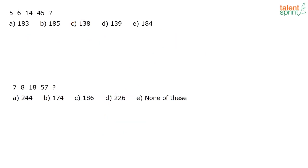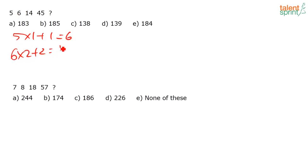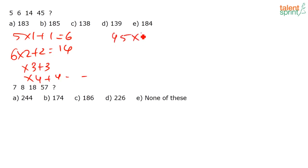Series: 5, 6, 14, 45, ?. The pattern is: multiply by n and add n. 5 × 1 + 1 = 6; 6 × 2 + 2 = 14; 14 × 3 + 3 = 45; so 45 × 4 + 4 = 184 — answer option E.